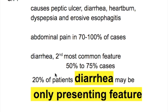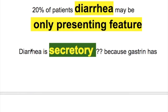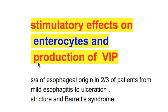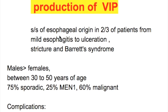What are the clinical features? Zollinger-Ellison syndrome causes peptic ulcer, diarrhea, heartburn, dyspepsia, and erosive esophagitis. Abdominal pain occurs in 70 to 100% of cases and is the most common symptom. Diarrhea is the second most common feature, occurring in 50 to 70% of cases; 20% of patients have diarrhea as the only presenting feature, and it is secretory — because gastrin has a stimulatory effect on enterocytes and production of vasoactive intestinal peptides. Signs and symptoms of esophageal origin occur in two-thirds of patients, ranging from mild esophagitis to ulceration, stricture, and Barrett's syndrome.